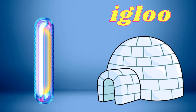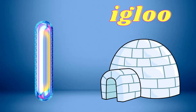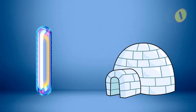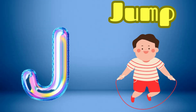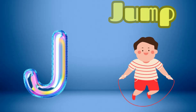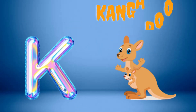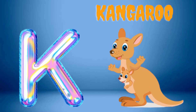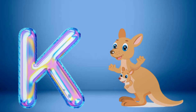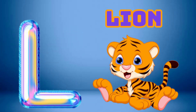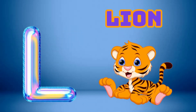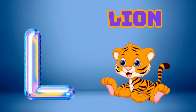I is for Igloo, I-I-Igloo. J is for Jump, J-J-Jump. K is for Kangaroo, K-K-Kangaroo. L is for Lion, L-Lion.